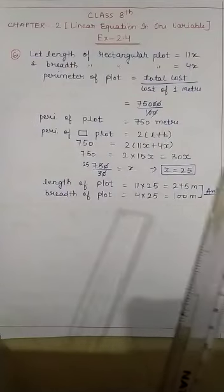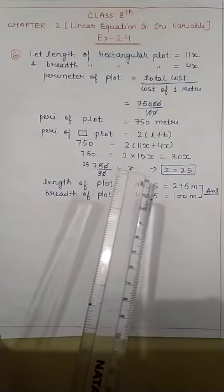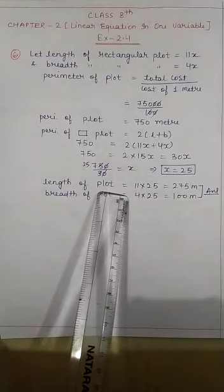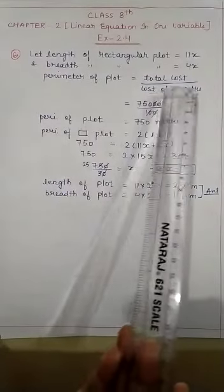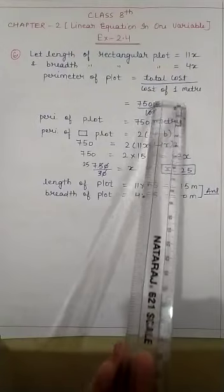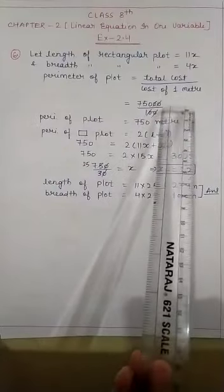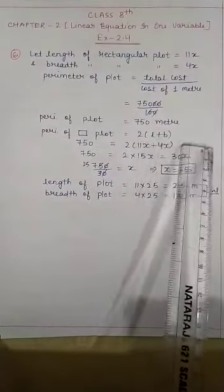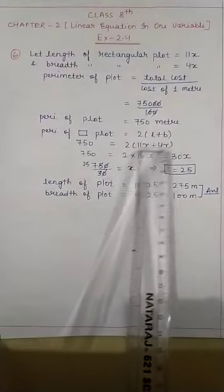At the rate of Rs. 100 per meter, it will cost the village panchayat Rs. 75,000 to fence the plot. The word 'fence' means perimeter. The total perimeter cost is 75,000 and cost per meter is Rs. 100. So perimeter = total cost ÷ cost per meter = 75,000 ÷ 100 = 750 meters.